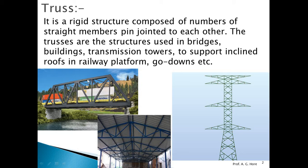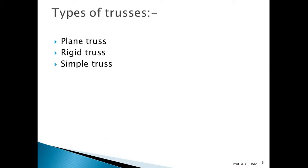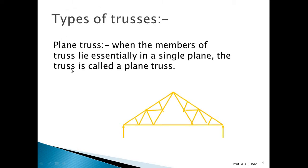In this presentation we will discuss the analysis of trusses. There are mainly three types of trusses: plain truss, rigid truss, and simple truss. A plain truss is one where all members lie essentially in a single plane — it is a coplanar truss.